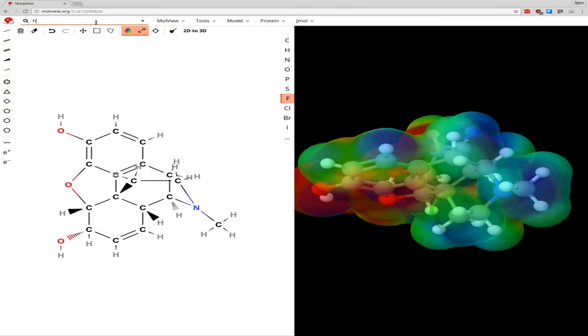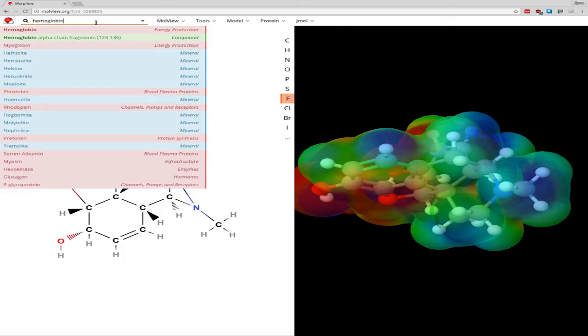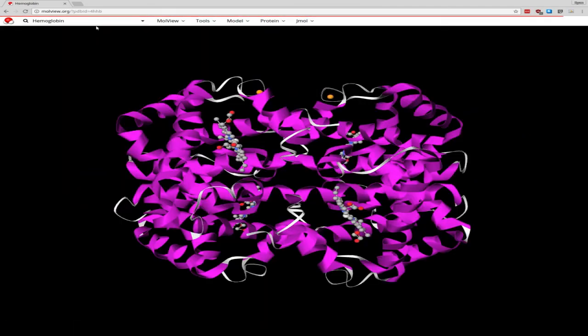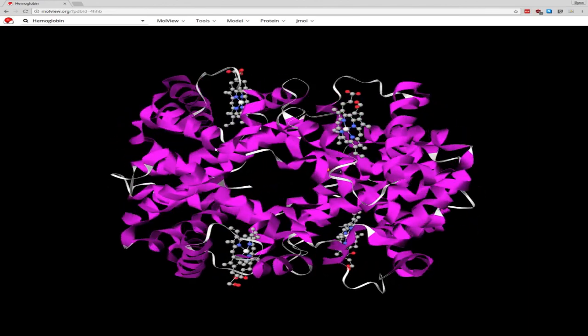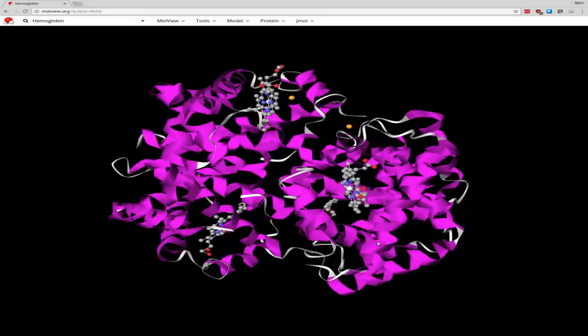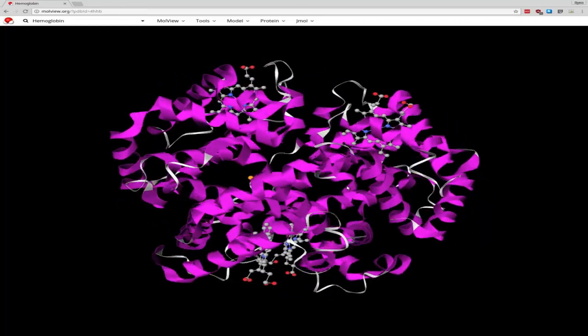Malvue lets you look up actually very large molecules, such as proteins. So we can look up hemoglobin, for instance. Now proteins, they're so large, they have kind of a special 3D notation for representing all those atoms in the molecule. So we have these bands and ribbons to represent regions of the hemoglobin molecule.